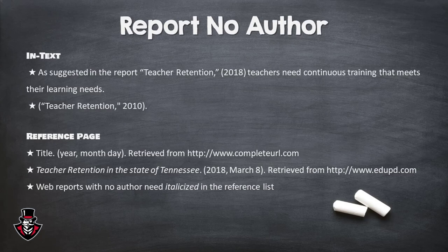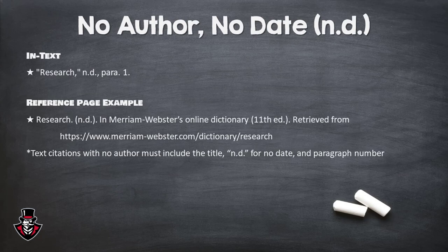Sources with no author or date will most often come from websites, blog posts, magazines, articles, and other forms of print media, not necessarily considered to be scholarly material, but supportive of your research argument, as you insert in-text citations and when preparing your reference page.